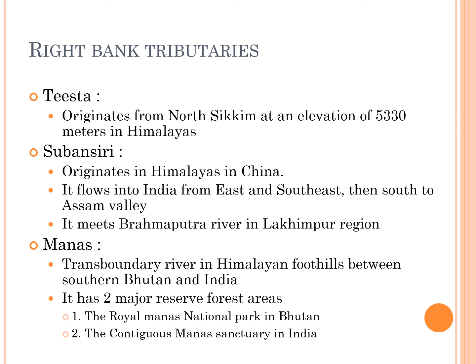The right bank tributaries of the Brahmaputra river begin with Tista. This river originates from North Sikkim at an elevation of 5330 meters in the Himalayas. Previously, Tista was a tributary of the Ganga, but currently Tista is a tributary of the Brahmaputra river.